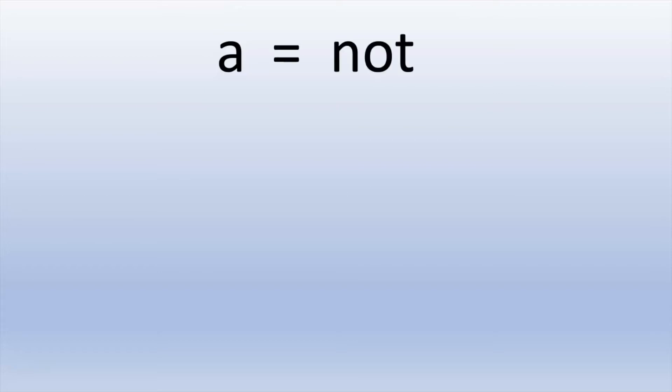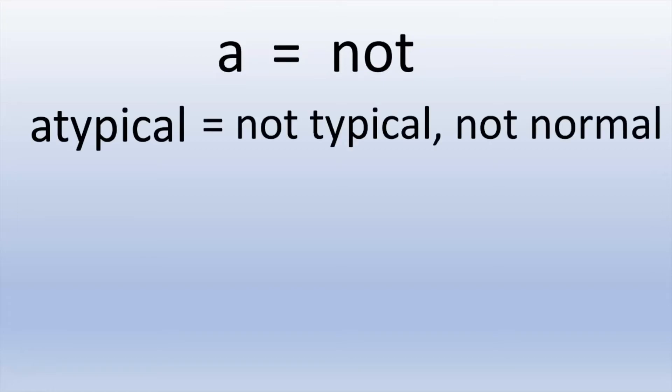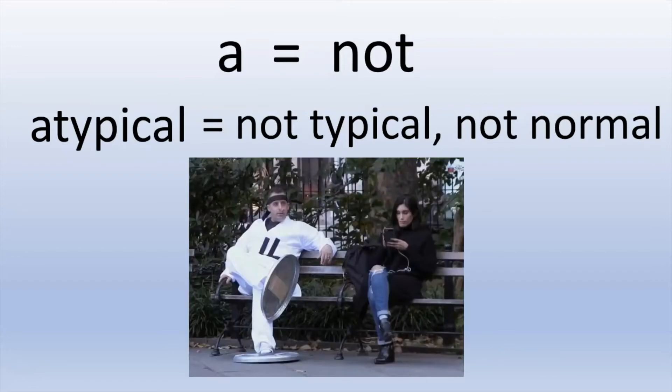The prefix A means 'not.' I only found one SAT word that had this prefix and it is 'atypical.' Atypical just means not typical or not normal. For example, if you were sitting in a park and a gentleman dressed like this came up and sat beside you, this would be considered atypical behavior.